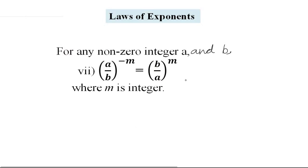For any non-zero integer a and b, the 7th law is: a upon b whole raise to the power negative m equals b upon a whole raise to the power m. Here m is an integer. So if some power has a fraction and its power is a negative exponent, then the fraction will become its reciprocal. If it was a upon b, then it will be b upon a.